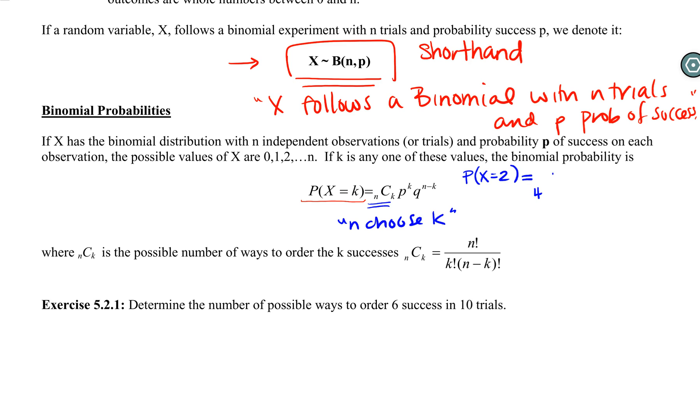So if we were to do this question, we had four trials, four different questions. We wanted two of them to be successes. Probability of success was 0.2. Probability of failure was 0.8, and that needs to be to the 4 minus 2. So now we're very close to what we had on the worksheet: 0.2 squared, 0.8 squared. The only thing is that we need that 6, that 4 choose 2.